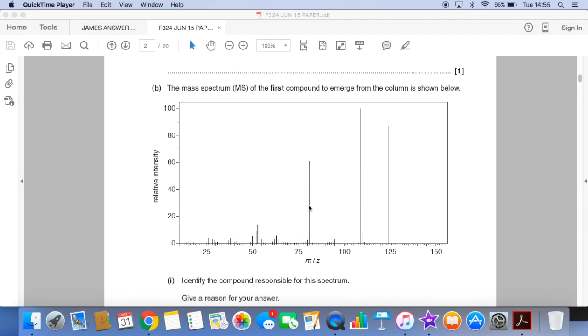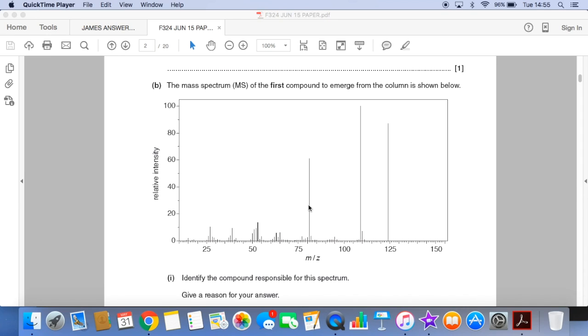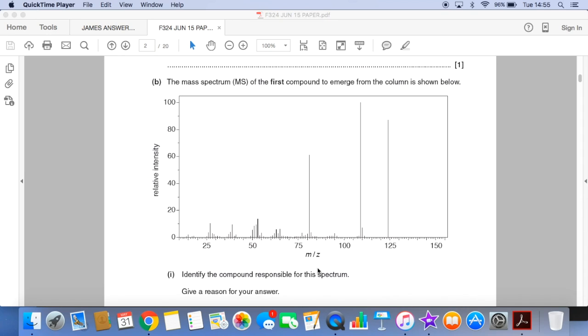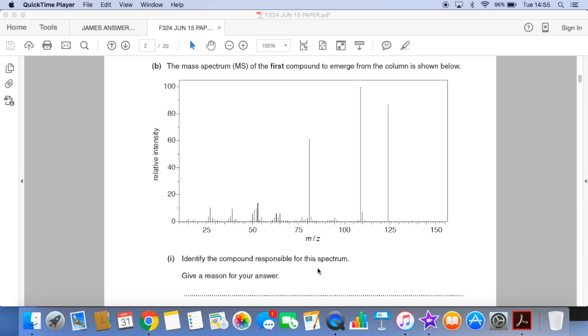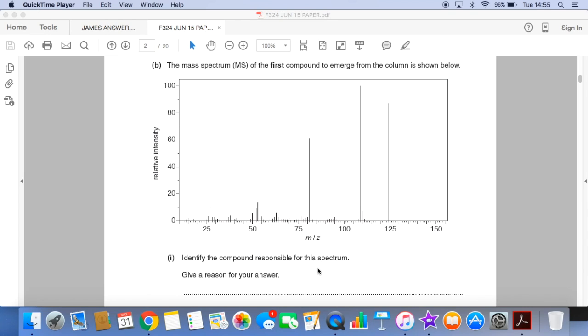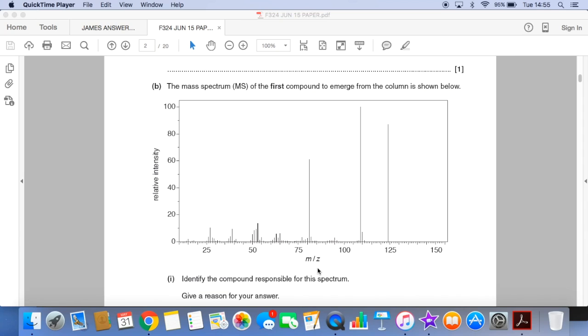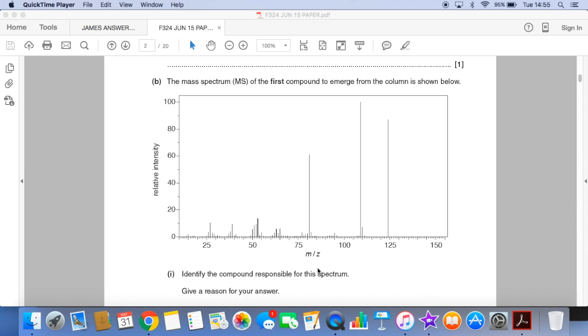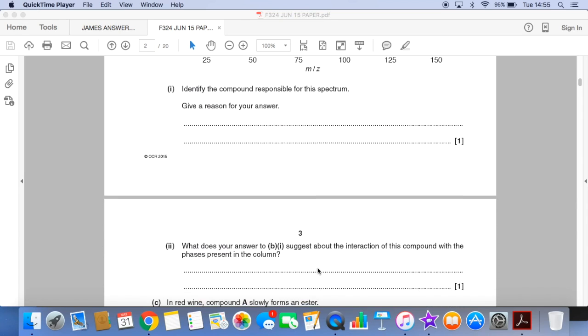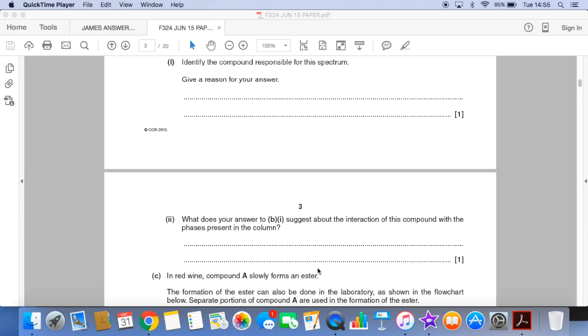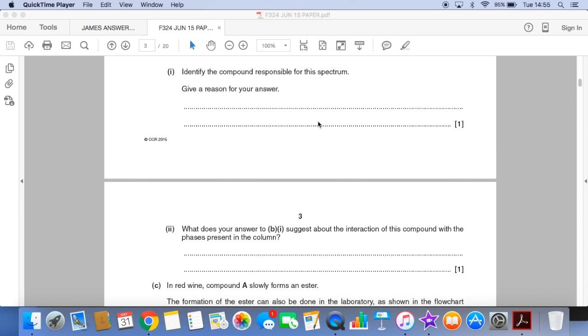There's the mass spectrum of the first compound to emerge and we have to identify the compound responsible for the spectrum and give a reason. And then what does your answer here suggest about the interaction of this compound with the phases present in the column?